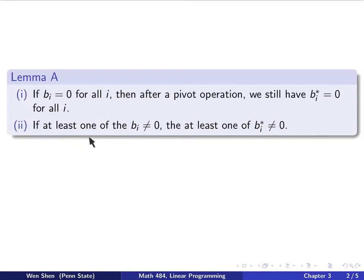Second, if at least one of the bi's is not zero, then after a pivot step, at least one of them will not be zero. It might be a different one, or it might be more, but at least one will not be zero. Now, the proof of this lemma is not that difficult. It boils down to discuss a couple of cases, so this will be a homework problem.